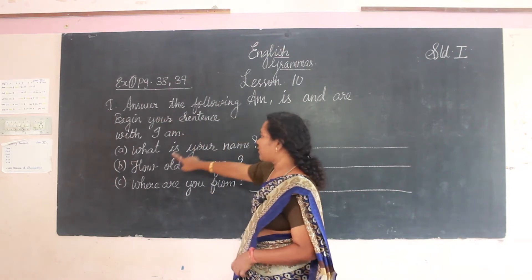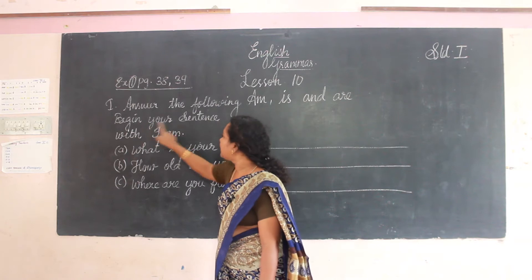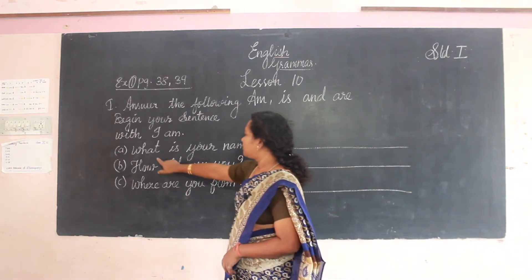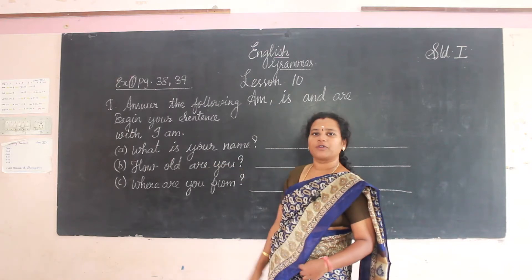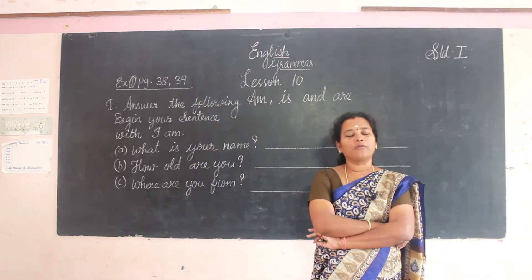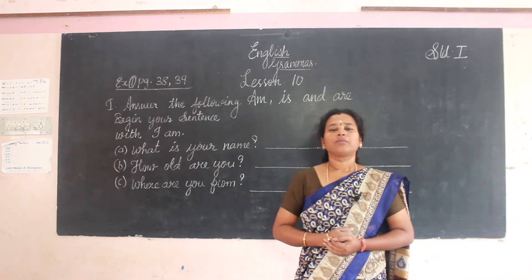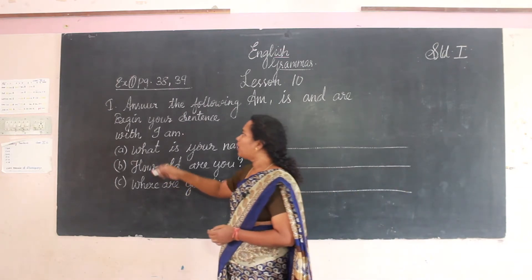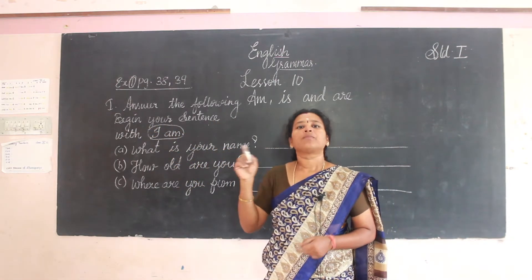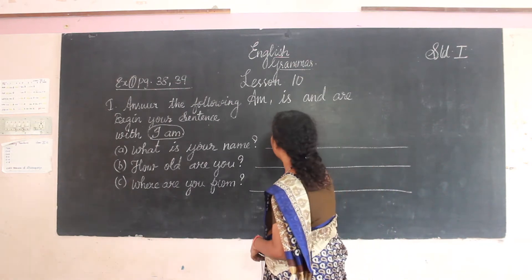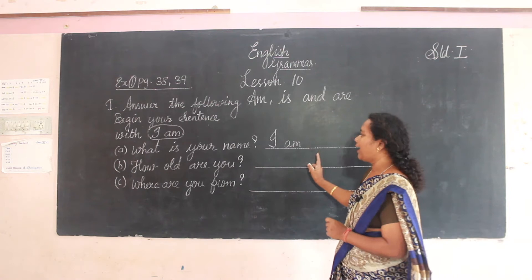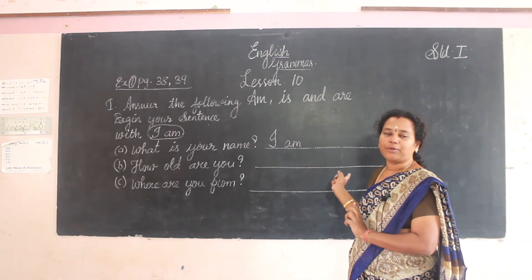Answer the following questions, but begin your sentence with 'I am'. First question: 'What is your name?' Normally we say 'My name is Kalavati,' but here you have to begin with 'I am', so you write 'I am Kalavati'. You have to write your own name.